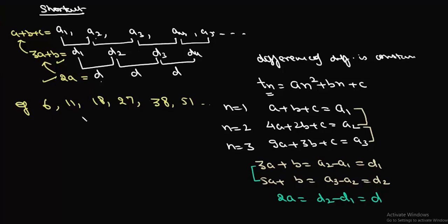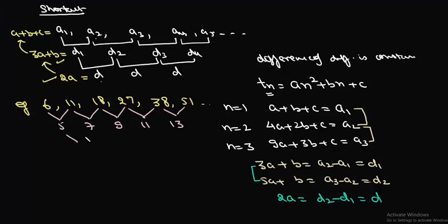Take the sequence 6, 11, 18, 27, 38, 51. We need to find its nth term. The differences are: 11−6 = 5, 18−11 = 7, 27−18 = 9, 38−27 = 11, 51−38 = 13. The difference of differences is 2, 2, 2, 2 — constant.